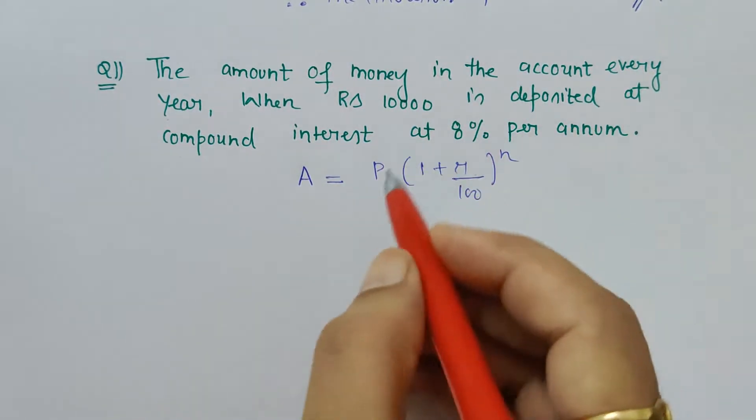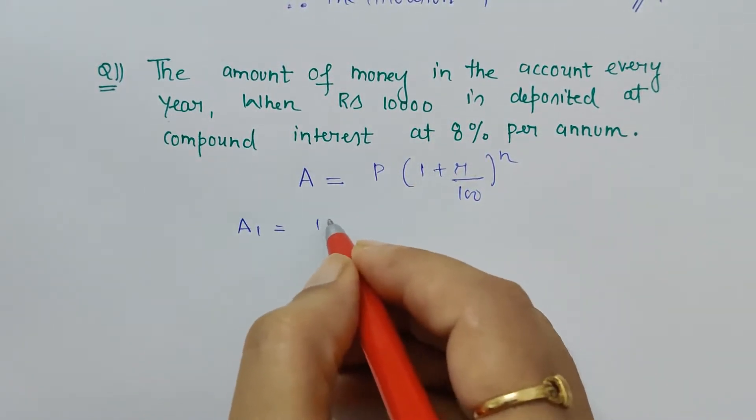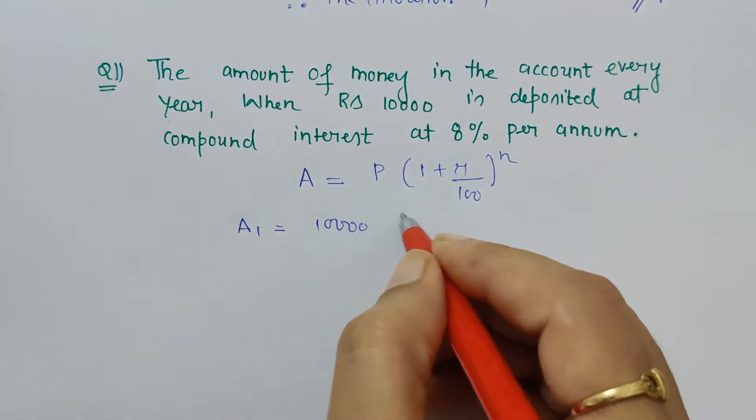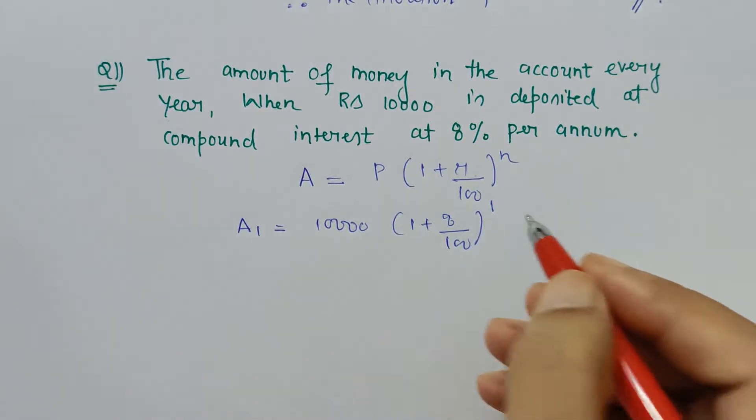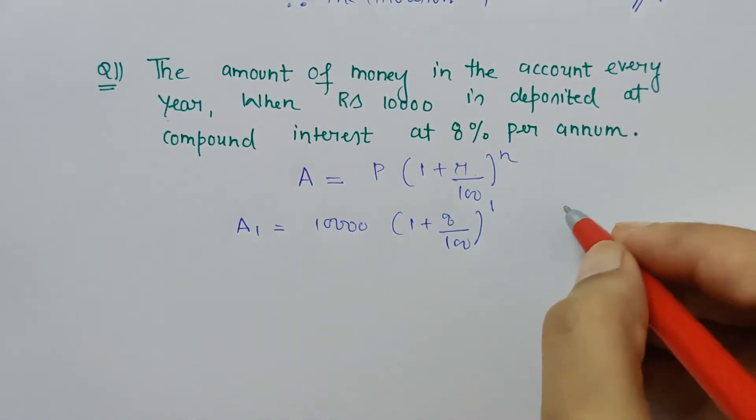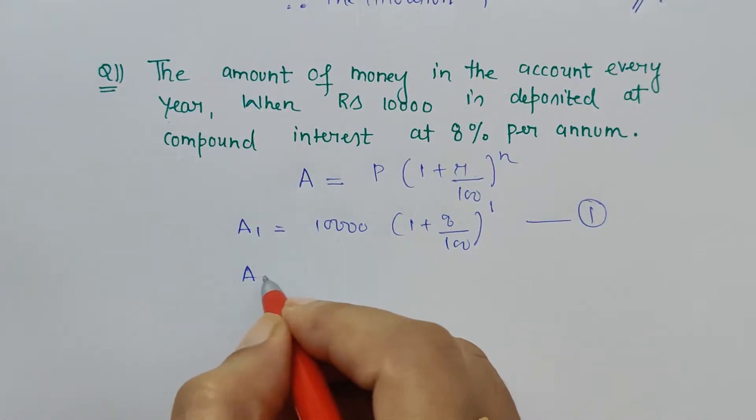the thing would be 10,000(1 + 8/100), and since it is first year, in the power we will have 1. So this is my first year case.